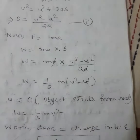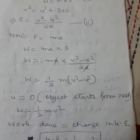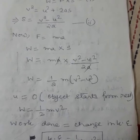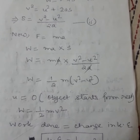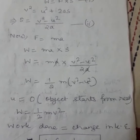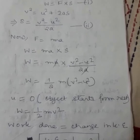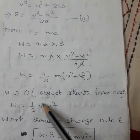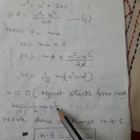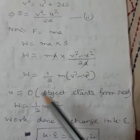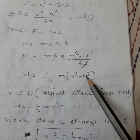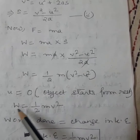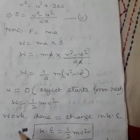Now if we consider the object starting from rest, that means u is equal to 0. So if the object starts from rest, u equals 0, and putting this value in our equation we get W is equal to half m v square.